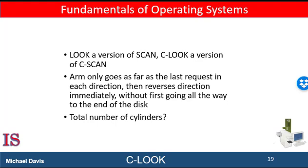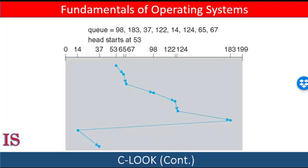Another technique, similar to SCAN, is LOOK, which works the same way as SCAN — going back and forth along the platter, picking up requests as it goes. The difference is that with LOOK, the system stops going in a direction if there are no requests in that direction, which saves a little head travel time. C-LOOK is like C-SCAN but doesn't continue to the end if there are no requests in that direction. Like C-SCAN, it will turn around and come back.